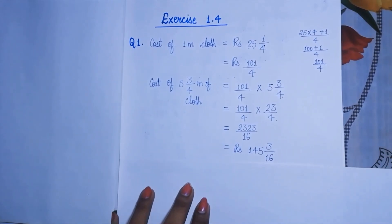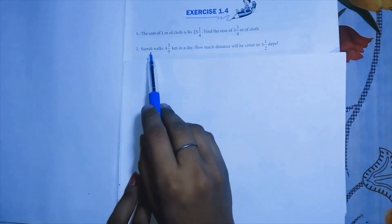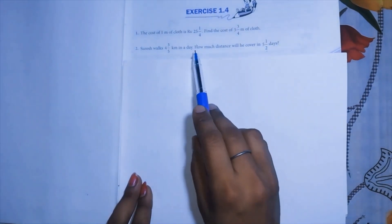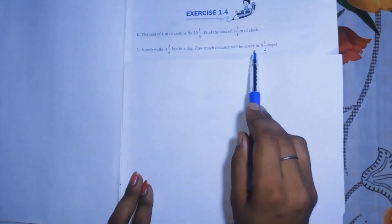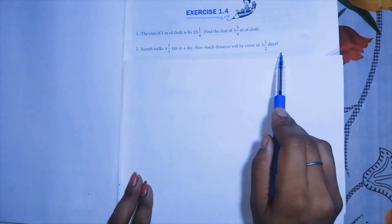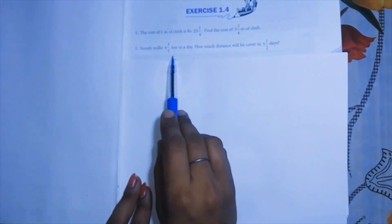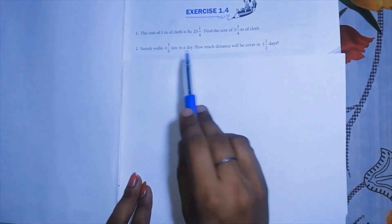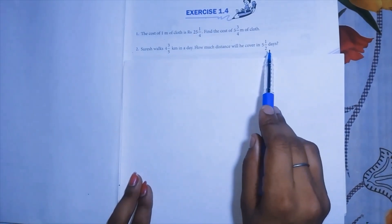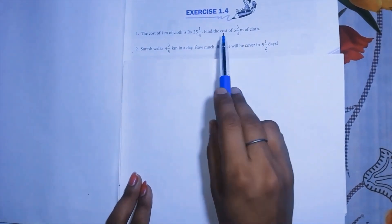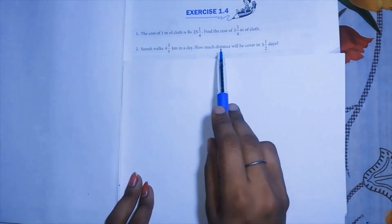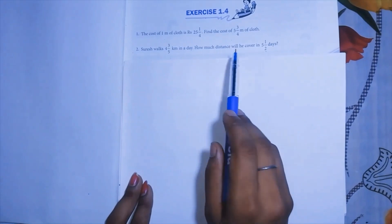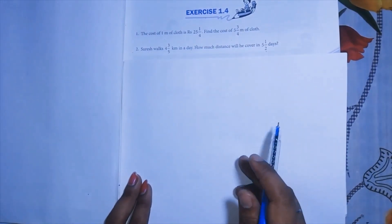The next question: Suresh walks 4 and 3/4 kilometers in a day. How much distance will he cover in 5 and 1/2 days? Suresh covers this distance in one day, and we have to find how much he covers in so many days — the same concept we used in question 1. This question you have to solve yourself to check whether you are following along or not.